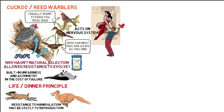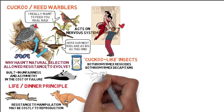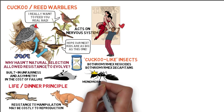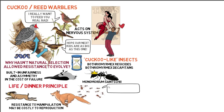Cuckoo-like insects such as Bothriomyrmex regicidus and Bothriomyrmex decapitans are two ant species that parasitize other species of ants. As young ants are fed by workers, the parasite manipulates the hive by cutting off the head of the host queen and is adopted by the orphan workers, who then tend to her eggs and larvae. The new workers eventually replace the original workers and then gradually replace the species.